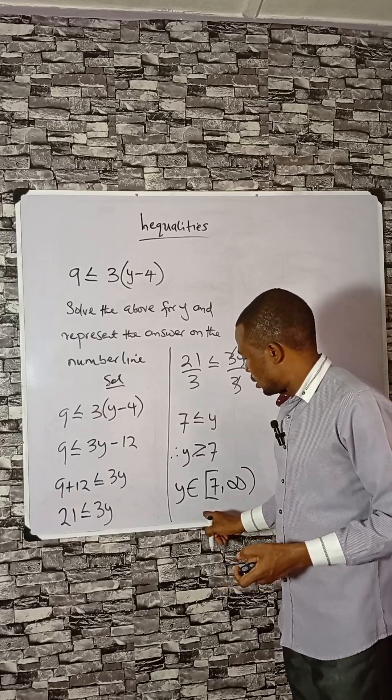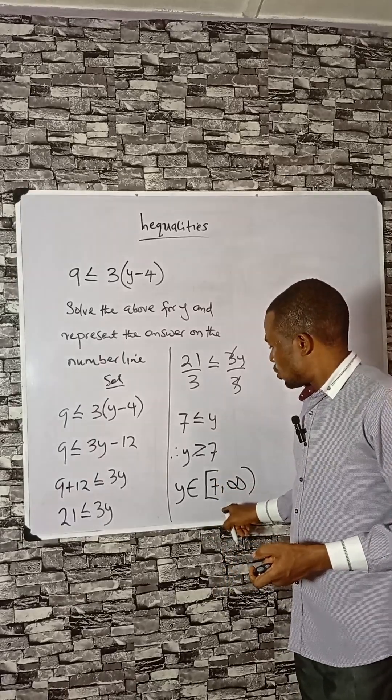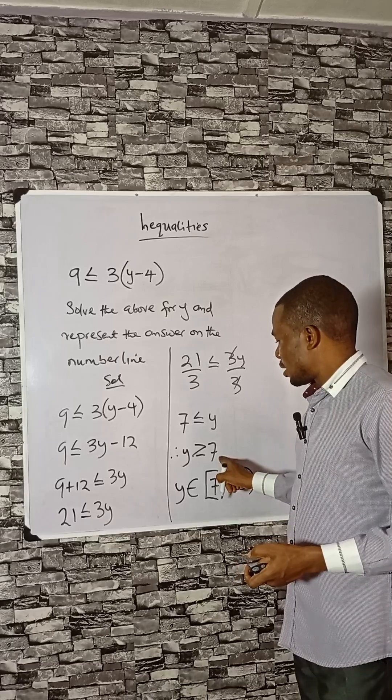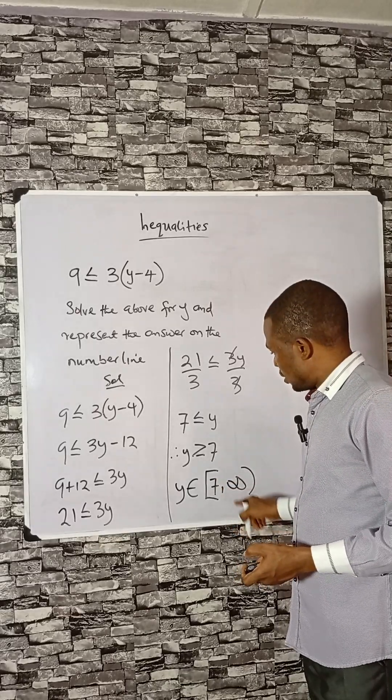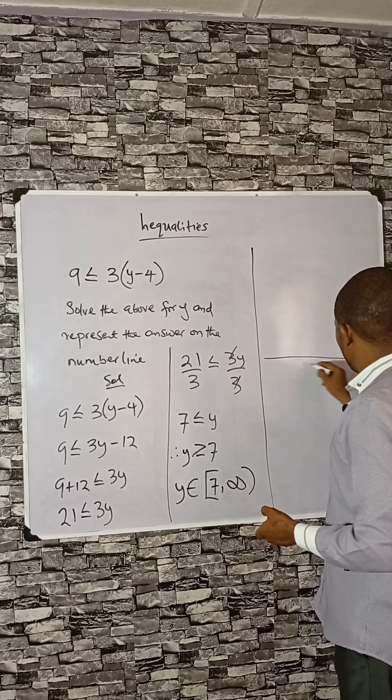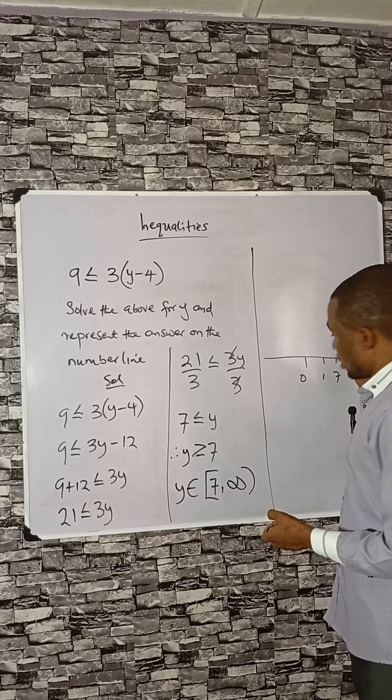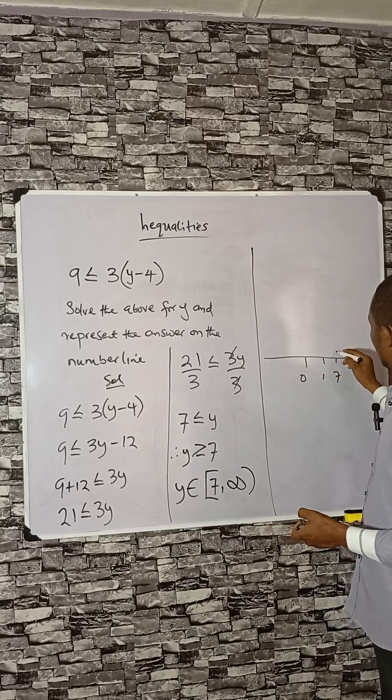And also from 7 to positive infinity. Now let's see this on a number line. We'll have 0, 1... 7, let's start here at 7.